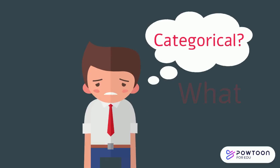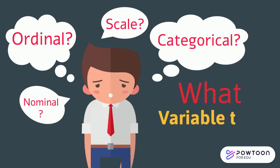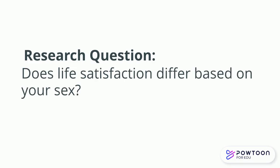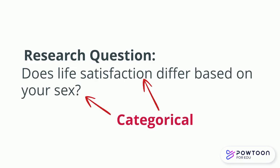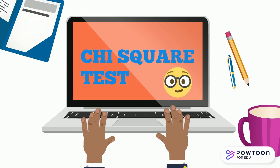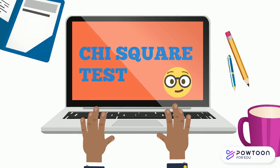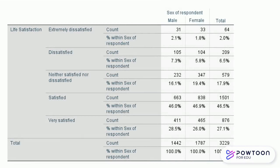The type of bivariate analysis you carry out will depend on the type of variables you have. If both your variables are categorical, like ours are here, then we can run a chi-square test. So to answer the research question, does life satisfaction differ by sex, where both variables are categorical, we would run a chi-square test. This involves first running a crosstab between the two variables where we can explore the distribution of the dependent variable for each category of the independent variable.